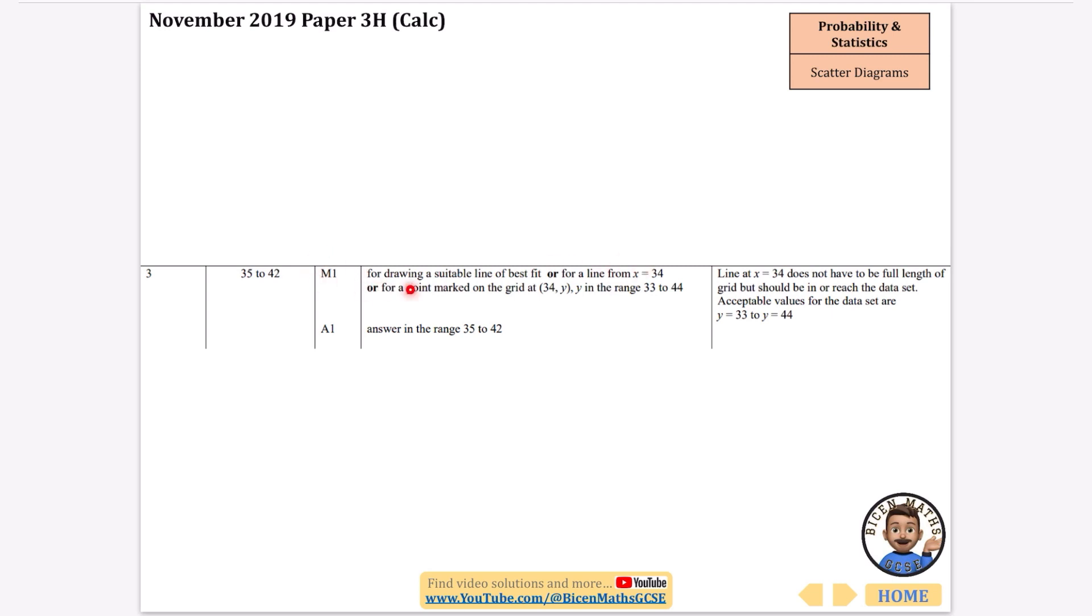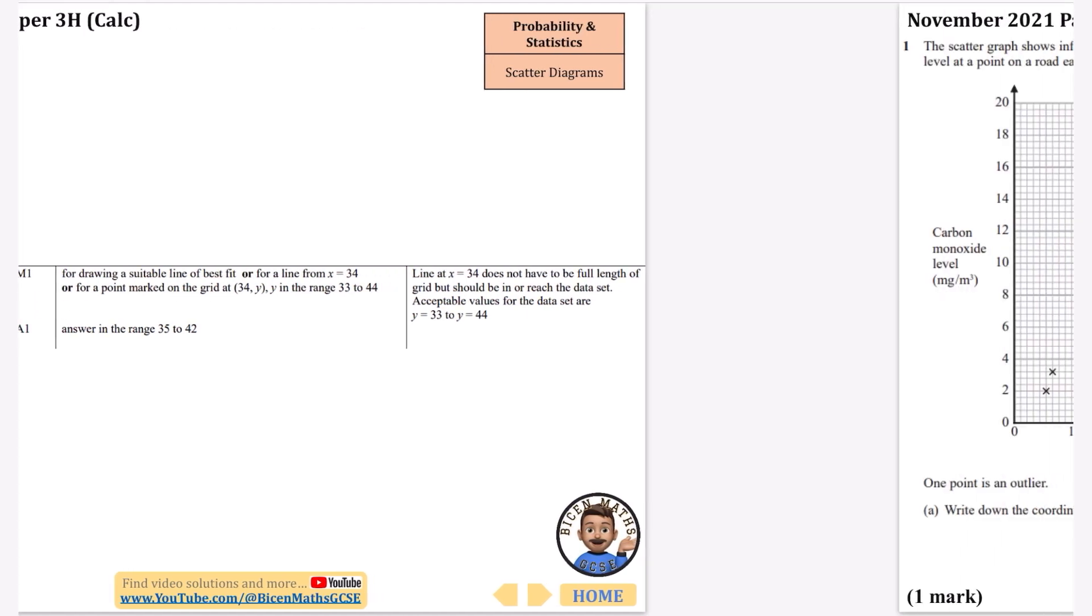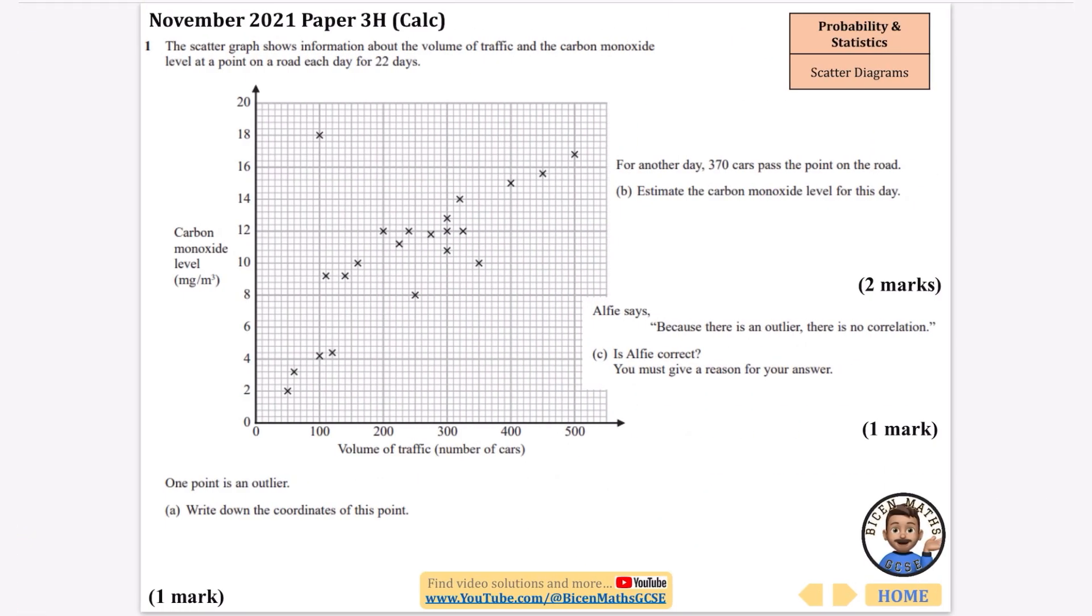The diagram's enough evidence for that. If you don't draw the line of best fit you're only going to get one out of those two marks. We have got between 35 and 42. There's a method mark here for drawing a line of best fit. They won't just accept a guess. It's a question one, so first thing you've come across in the paper.